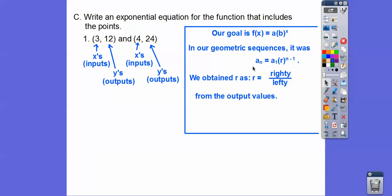And then in our geometric sequence, you guys, it's the same setup right here. This is a sub n, which is f of x right here. This is our nth term right here. Our nth term was our first term times r to the n minus 1. So this first term is this guy right here. And then here, back then, we found r by taking righty divided by lefty, and we did it from the output values, the second number, so 24 divided by 12. So here we do the same thing, but that's how we get b, because b is our r right here.